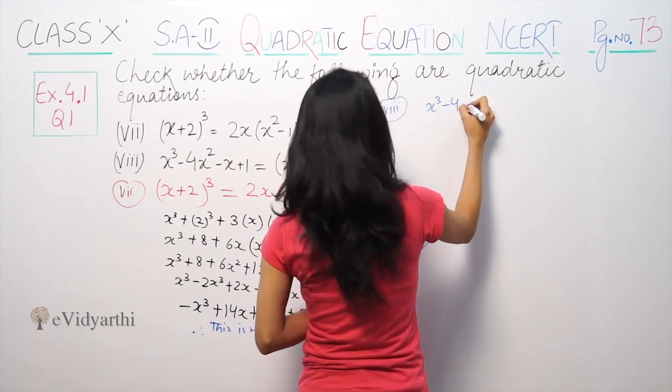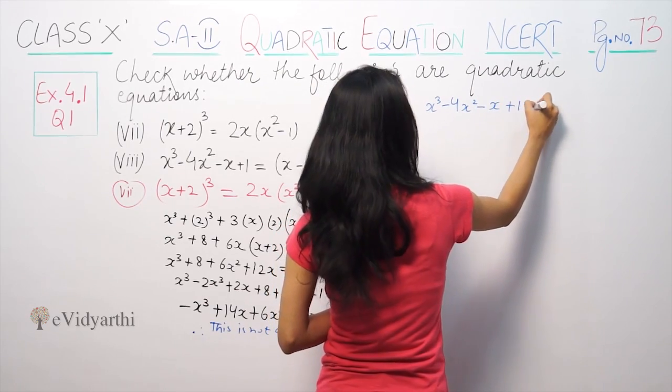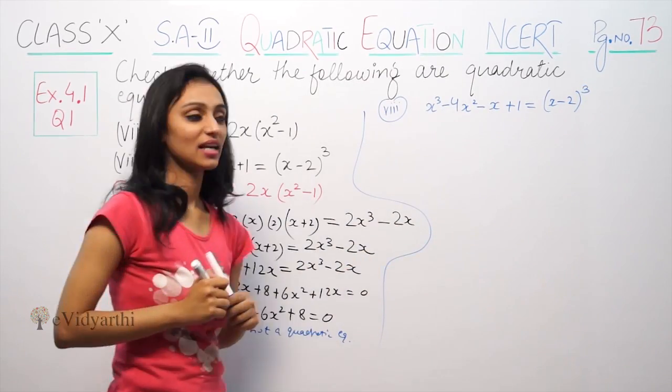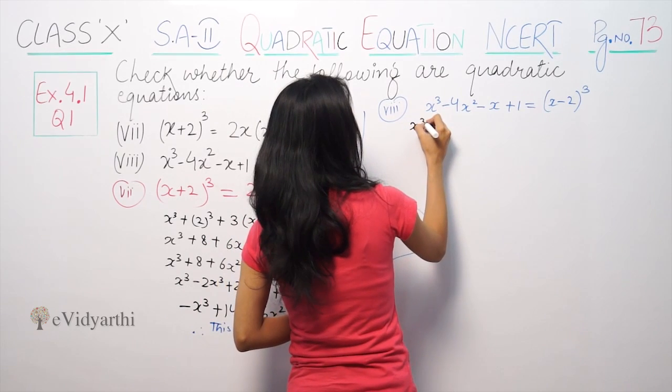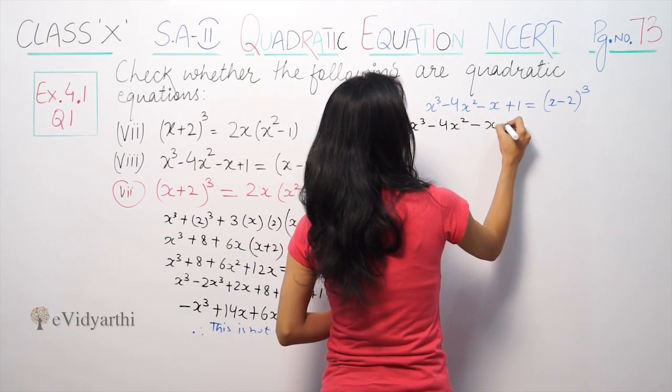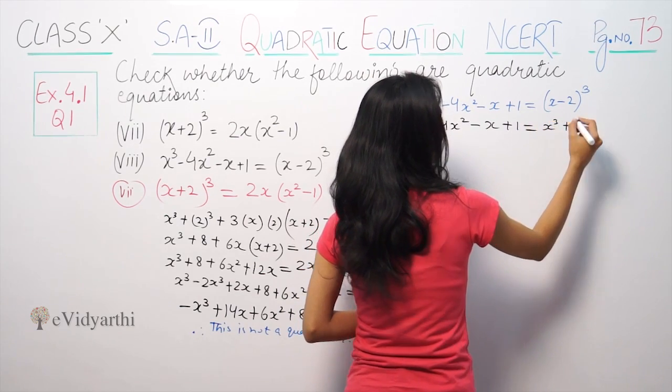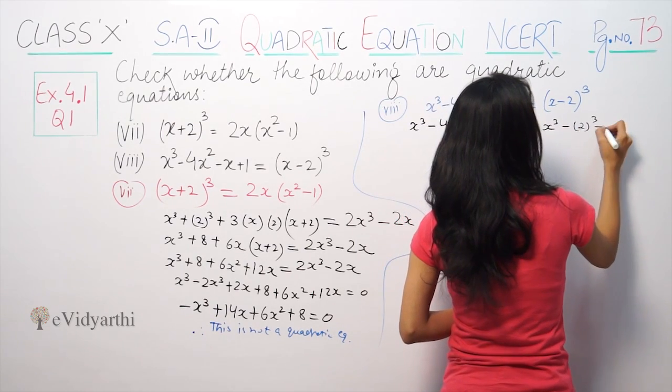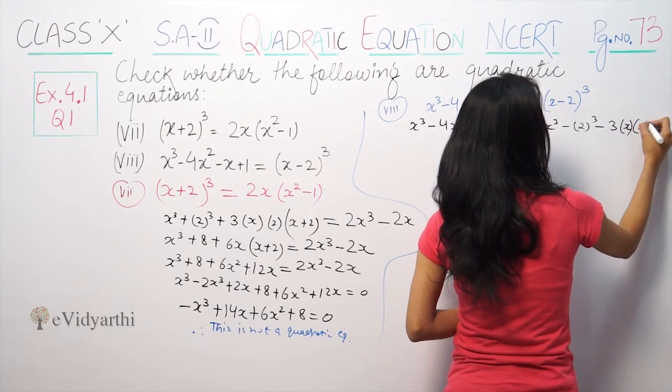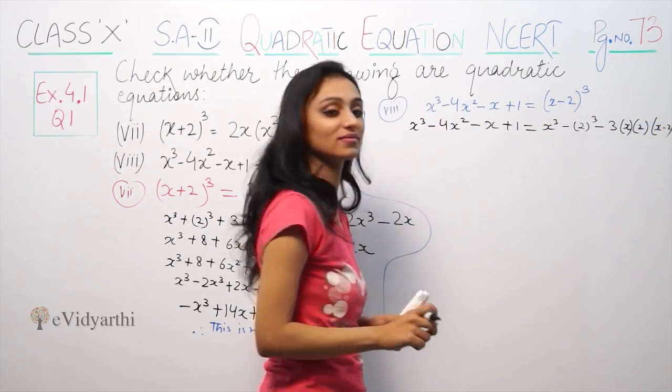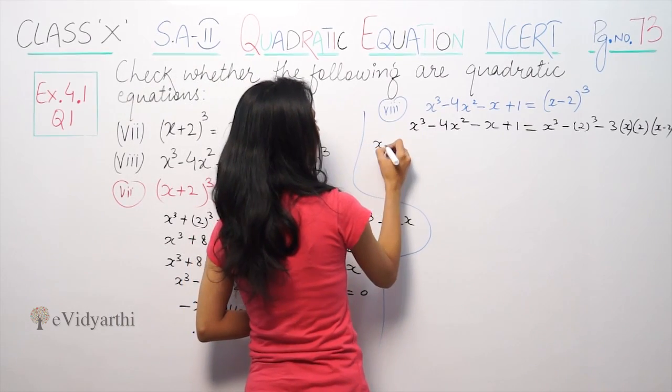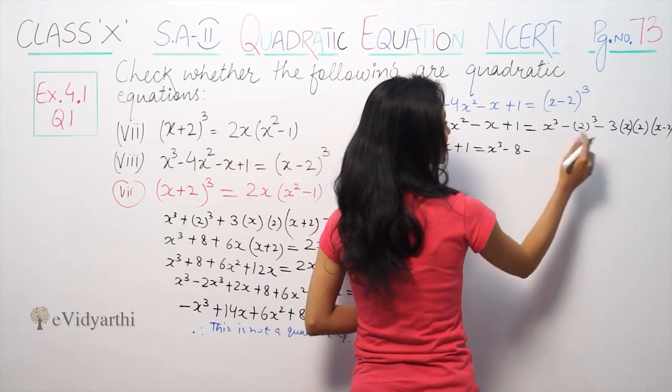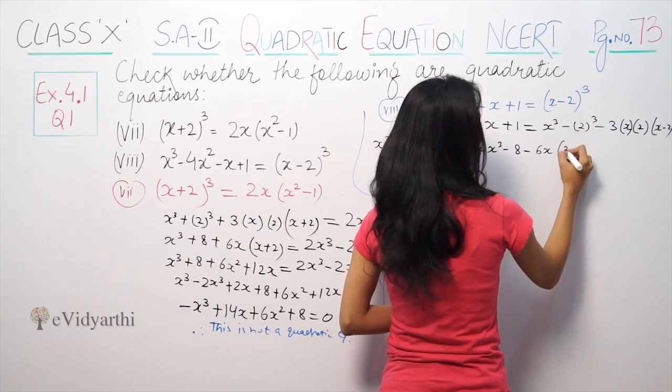x³-4x²-x+1 is equal to (x-2)³. So we have x³-4x²-x+1 is equal to a³-b³-3ab(a-b). So this becomes x³-4x²-x+1 is equal to x³-8 minus 6x(x-2).